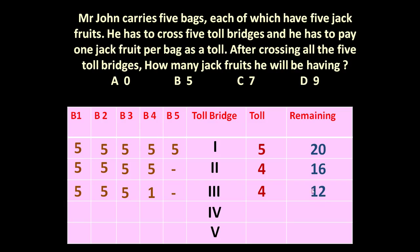Now these 12 jackfruits he will distribute into 3 bags: 5, 5, and 2 — with 2 bags empty. So when he crosses the 4th toll bridge, he pays only 3 jackfruits as toll tax, and he will be left with 7.